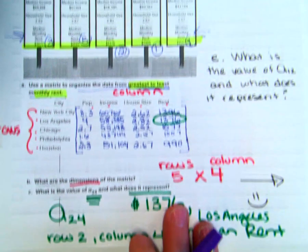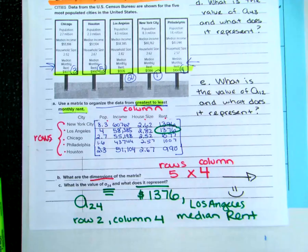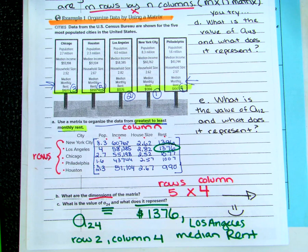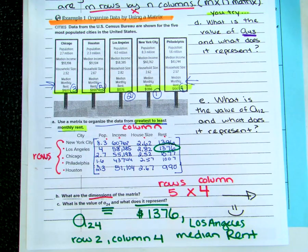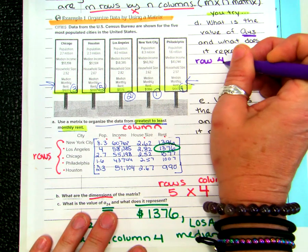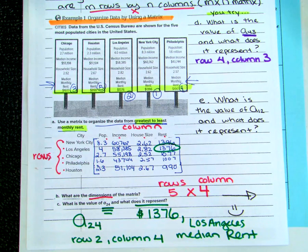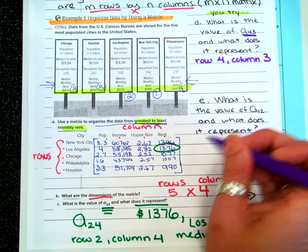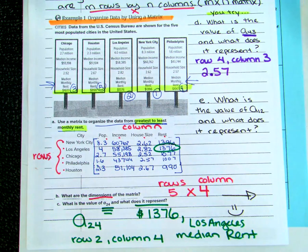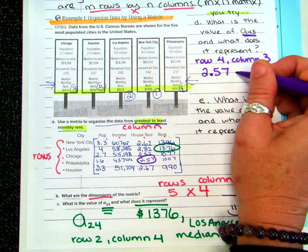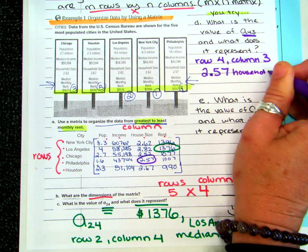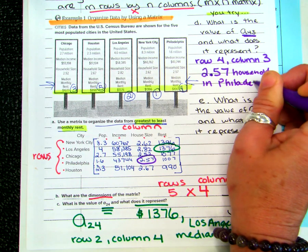Let's look at a couple more elements. Element A₄₃ means row four, column three. Going down four rows and over to column three — the number is 2.57. What does that mean? It's the Philadelphia household size.